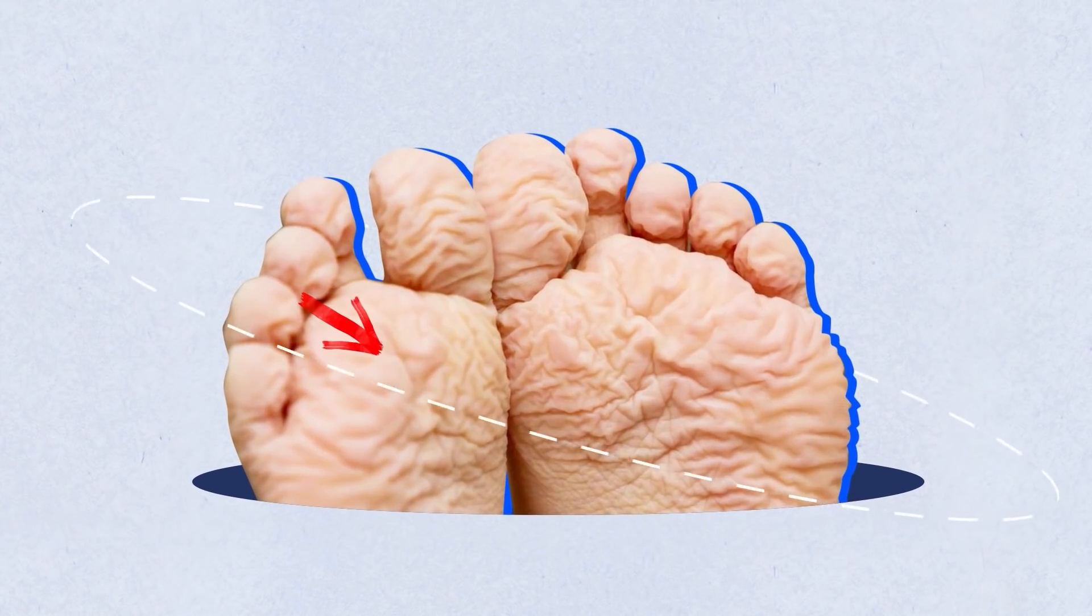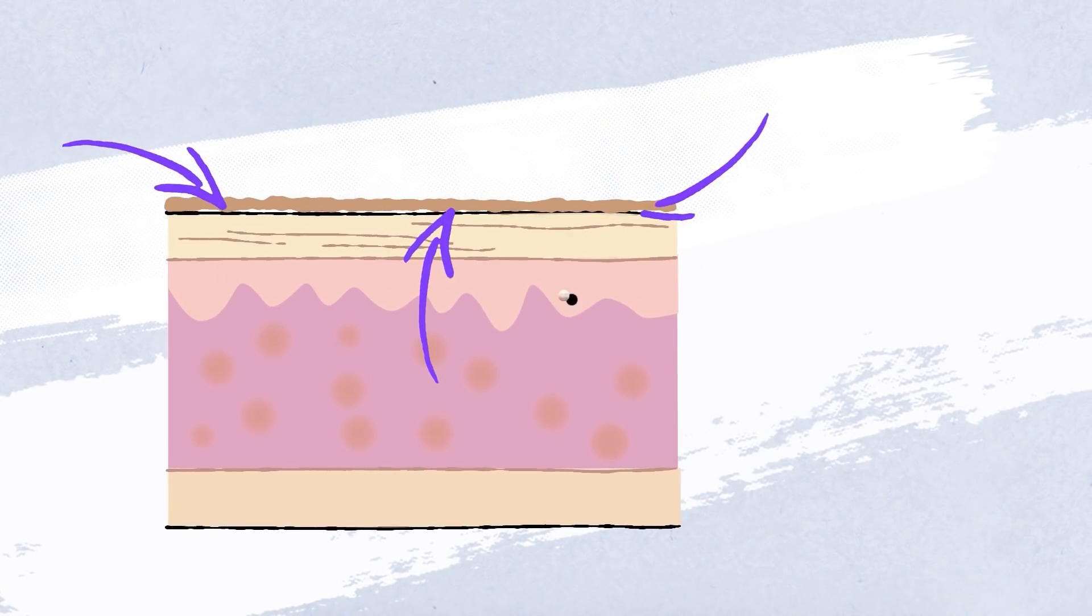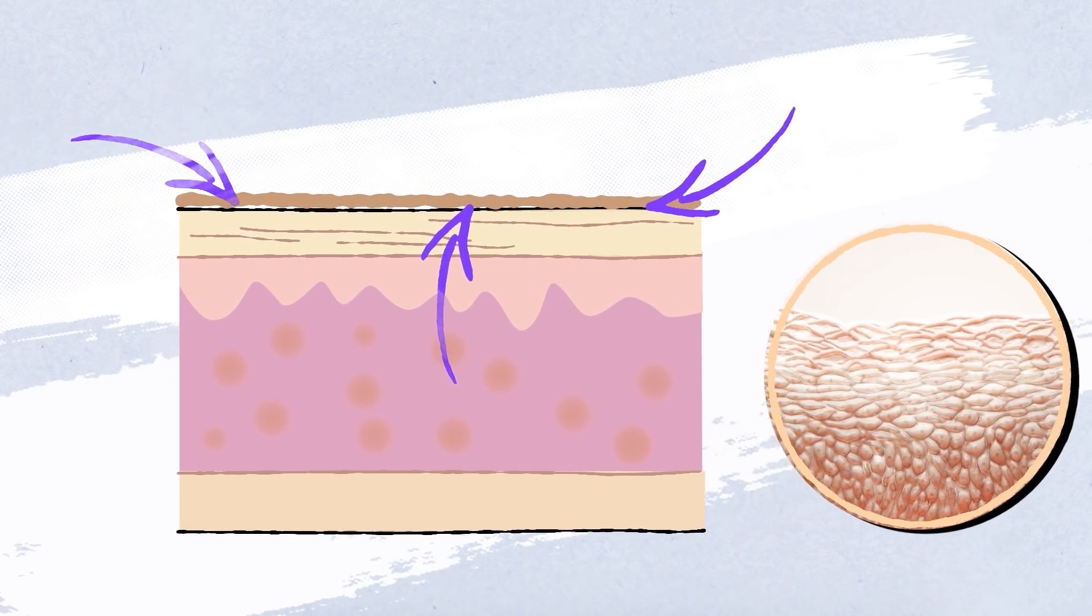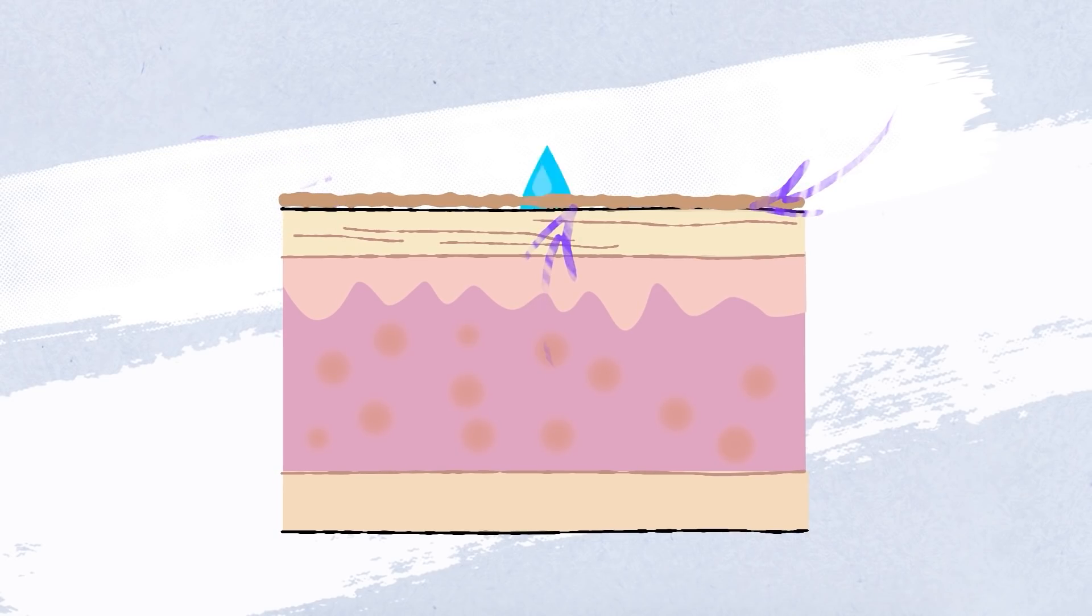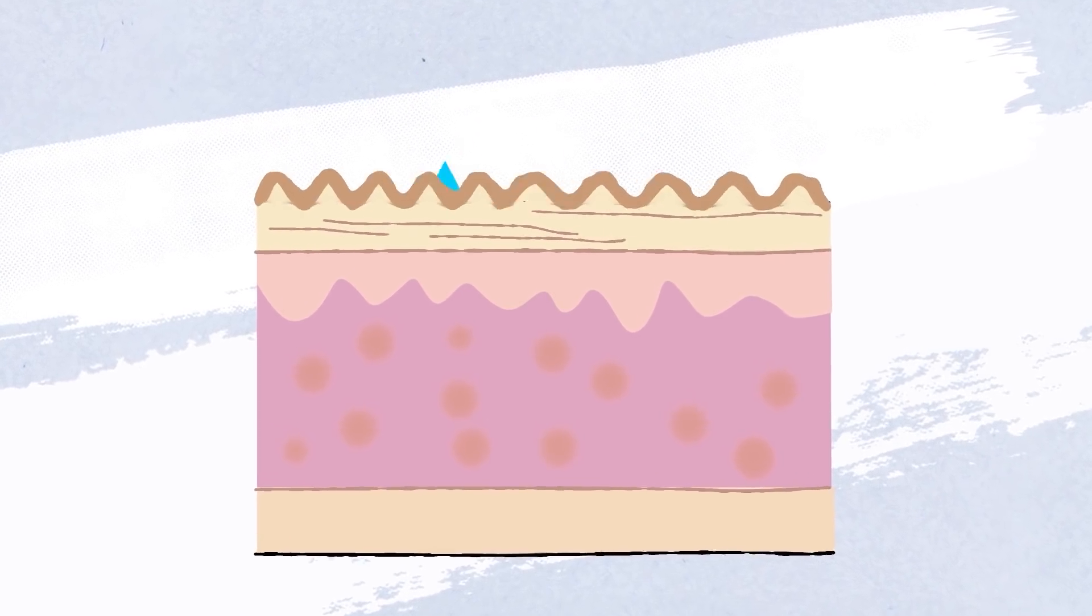It all starts with the skin wrinkling. You've probably noticed this effect, and it has a scientific explanation. The reason our hands and feet look like this is that the surface of the skin is covered in dead keratin cells. They absorb water faster than any other cells. And since there's a layer of the same, but living cells beneath, the dead ones simply puff up and eventually wrinkle.